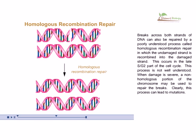This process is not well understood. When damage is severe, a non-homologous portion of the chromosome may be used to repair the breaks. Clearly, this process can lead to mutations.